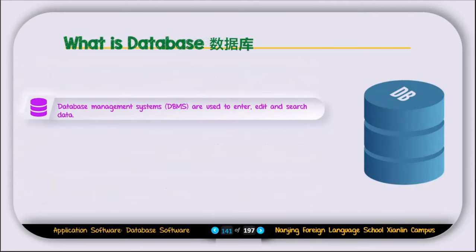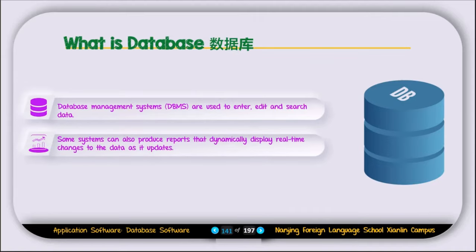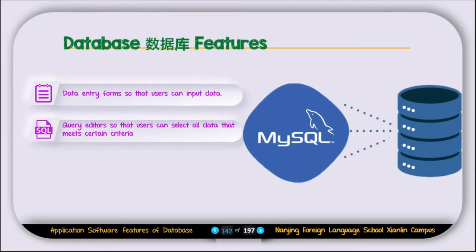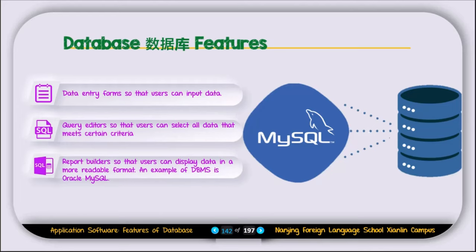The next type of application software is called database software. Database management systems, or DBMS, are used to enter, edit, and search data. Some systems can also produce reports that dynamically display real-time changes to the data as it updates. Features of database software include: data entry forms so users can input data; a query editor so users can select all data that meets certain criteria; and report builders so users can display data in a more readable format. An example of DBMS is Oracle MySQL.